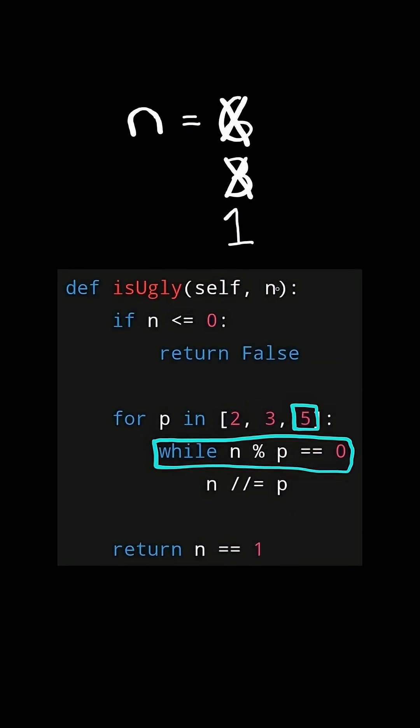Now we check, is n divisible by the prime factor 5? In this case, it's not. So we continue and exit the loop. Once we are done continuously dividing n by the prime factors 2, 3, and 5.